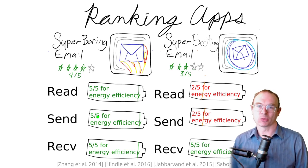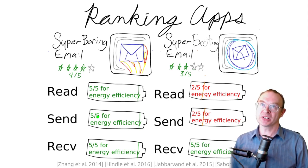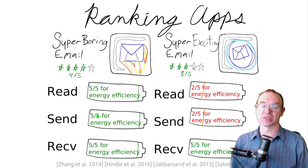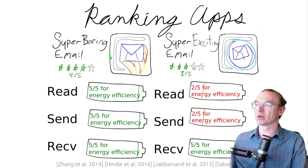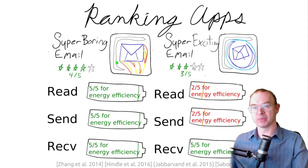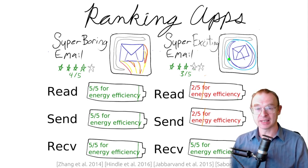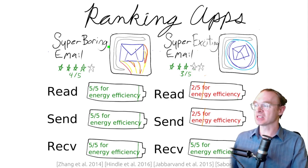Why would we care? If we measured energy about applications, we could do things with applications that we do with stoves, microwaves, and refrigerators. We could rank applications for their efficiency at doing certain tasks. Imagine a super boring email app — no animations, doesn't look pretty, just does the job. And a super exciting email app — AI-augmented, with animations, looks great, and will complete your emails for you. What we might find is that the boring email app for reading emails is very efficient because it just shows text and then goes to sleep.